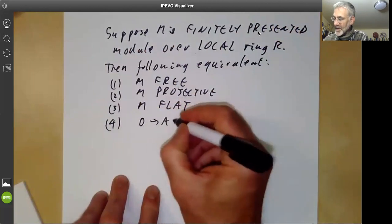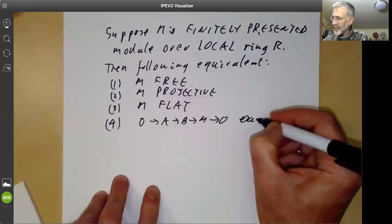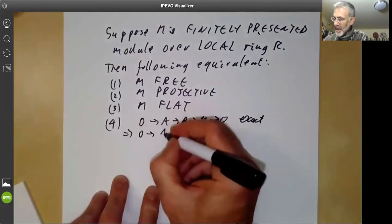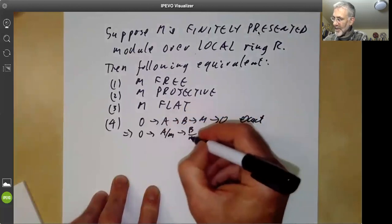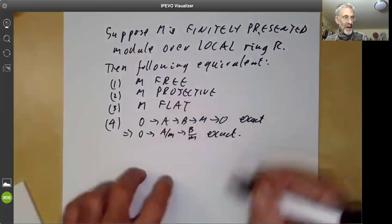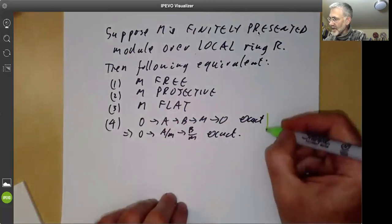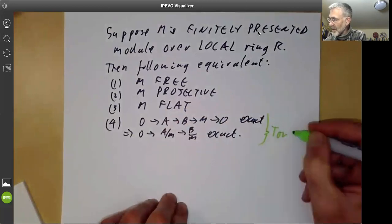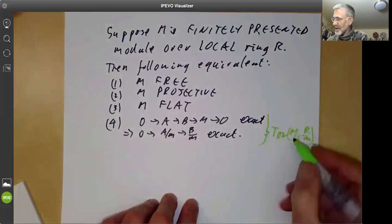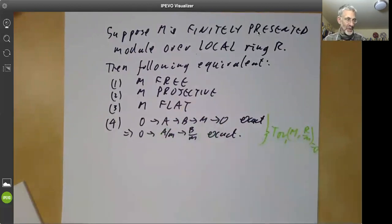And fourthly, 0 goes to A goes to B goes to M goes to 0 exact implies 0 goes to A over MA goes to B over MB is exact. When we've done homological algebra, we will see that this condition here is in fact equivalent to saying that Tor of M with R over M equals 0. But as we haven't actually defined the torsion groups yet, we're using this ad hoc definition for what Tor means.